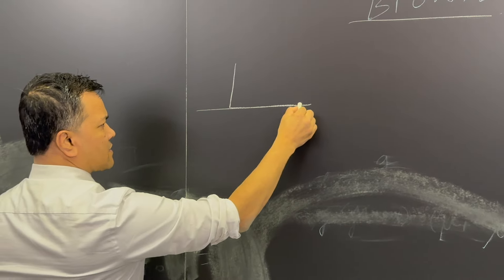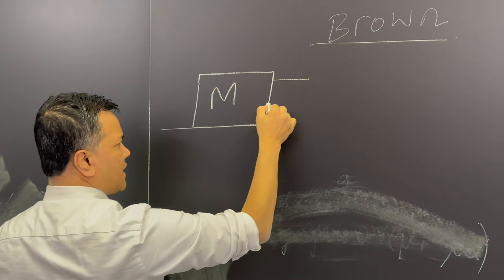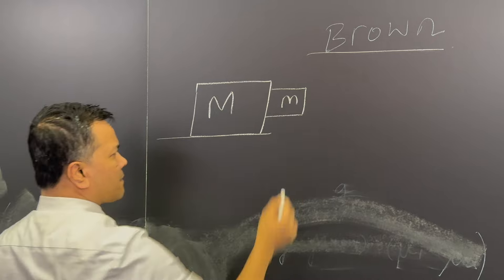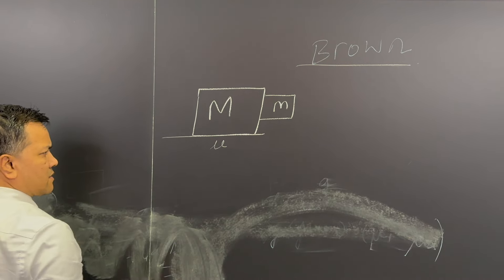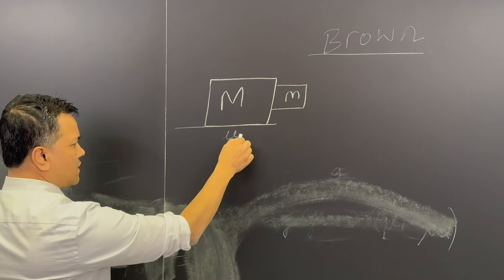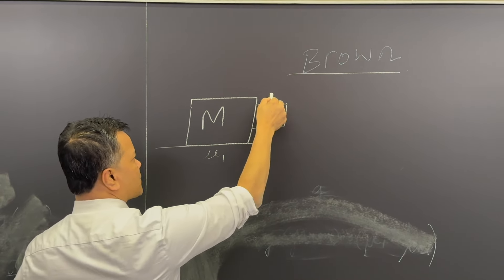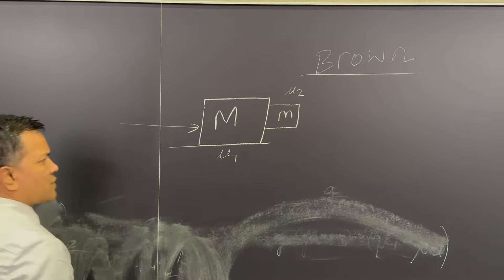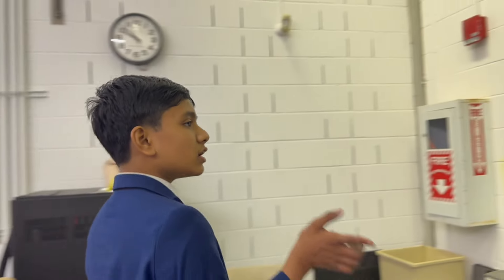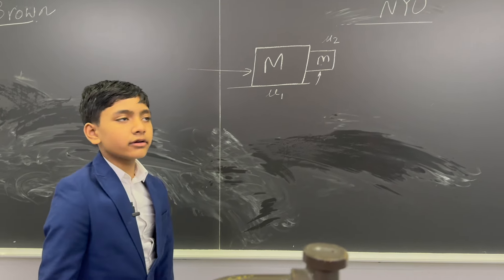Let's consider a big mass — let's call it big M. Let's consider a small m attached to the big M. We'll have some friction between the big mass and the ground and call it the coefficient of friction mu one, and some friction between the two boxes — let's call it mu two.